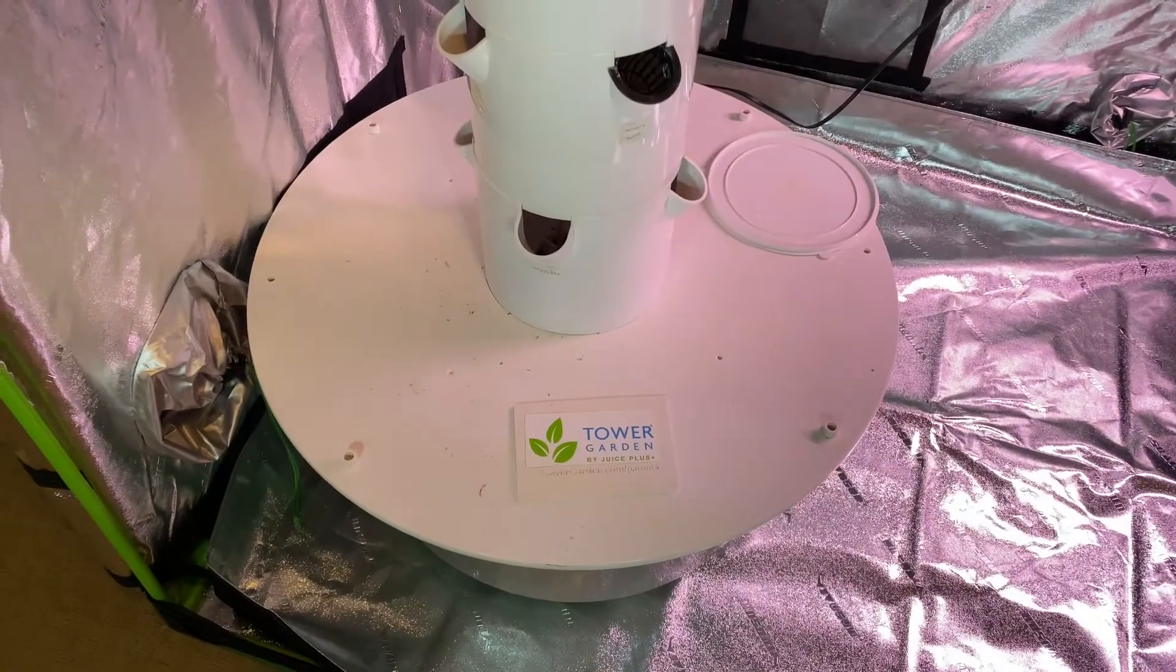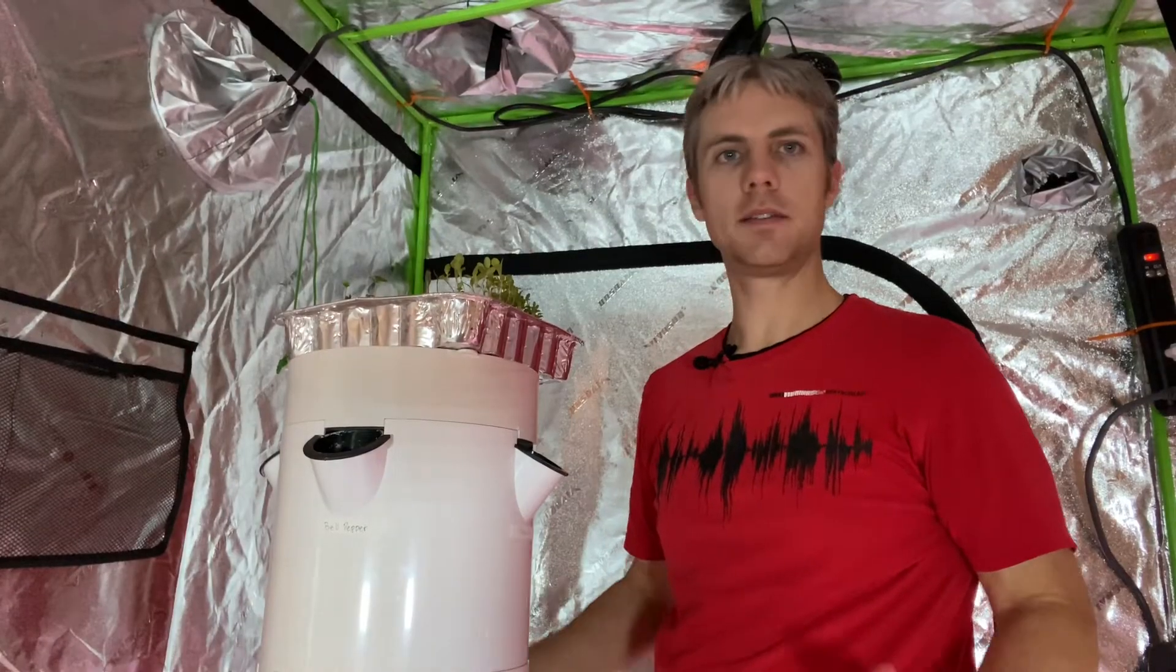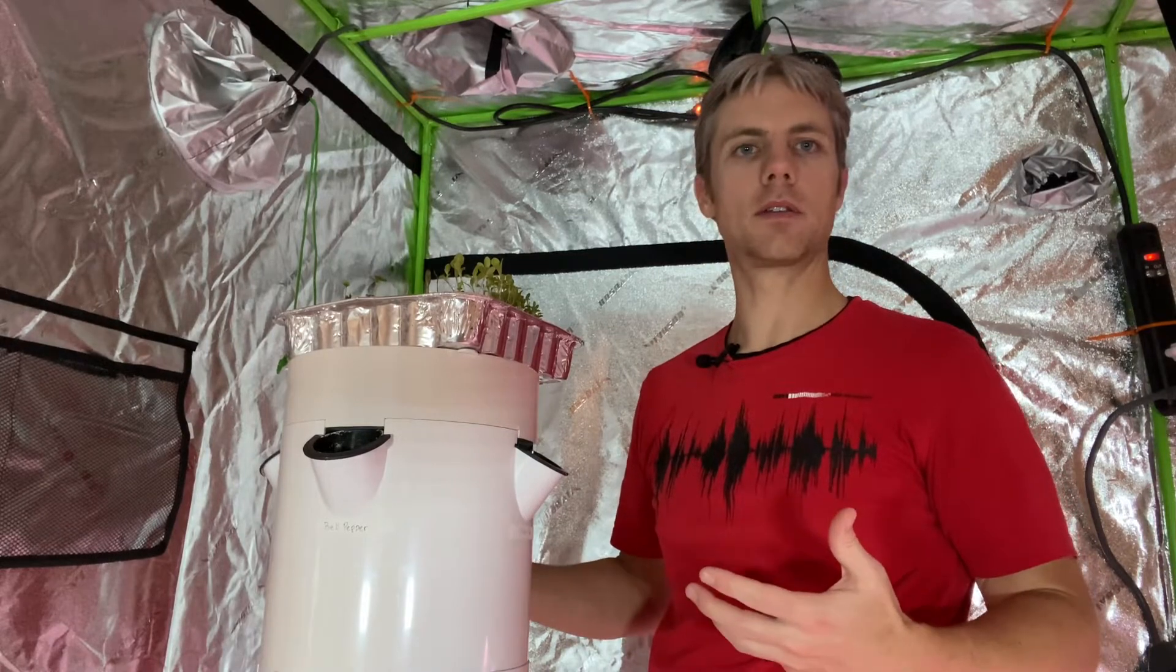And then the water will just continue all the way down back into the reservoir at the bottom. And there's the tower garden. Simple as that. So now that you've seen how fast and easy it is to put together a tower garden, I'll show you how difficult it is to start planting.